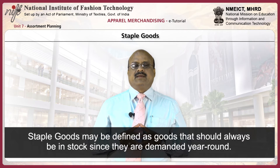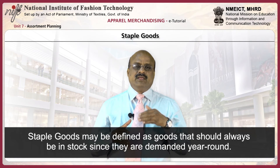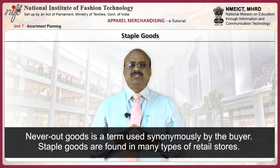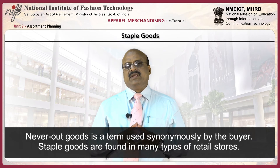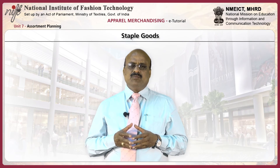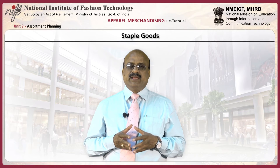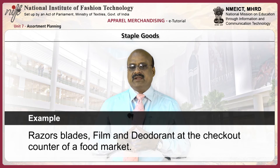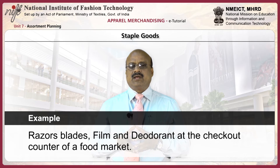Staple goods may be defined as goods that should always be in stock since they are demanded year-round — also called never-out goods. Staple goods are found in many types of retail stores; notice the kind of merchandise found by the checkout counter of a food market or variety store, such as razor blades, film, and deodorant.